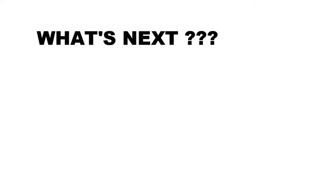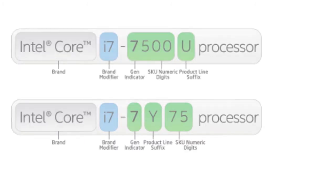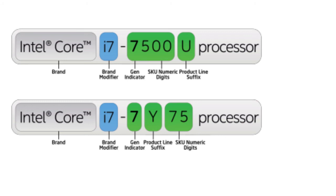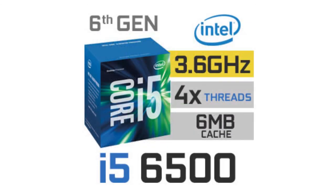Now let's understand how to read processor specifications. For example, with an Intel Core i7-7500U processor, the first digit — 7 — shows the generation. The suffix U denotes ultra low power; Y denotes extremely low power; H denotes high performance. Desktop chips have no suffix, for example Intel Core i5-6500. A K suffix denotes overclockable chips.